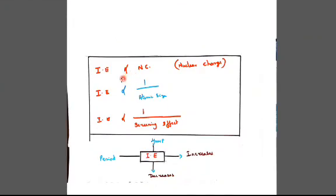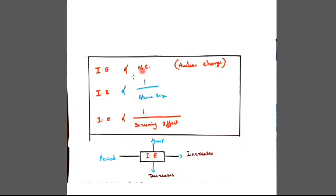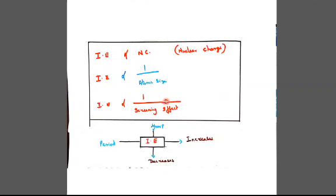Ionization energy is directly proportional to nuclear charge and inversely proportional to atomic size. Ionization energy is also inversely proportional to screening effect. If atomic size increases, ionization energy decreases. If nuclear charge increases, ionization energy increases. If the screening effect is very less, it will have more ionization energy. In the exam, any one-mark or two-mark question will be asked based on these rules — just remember them and apply.